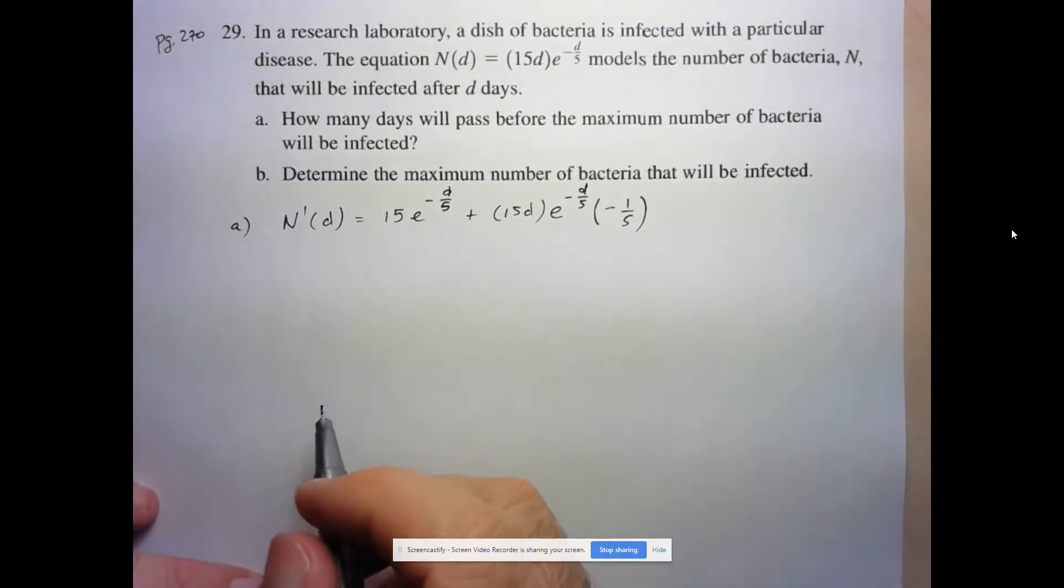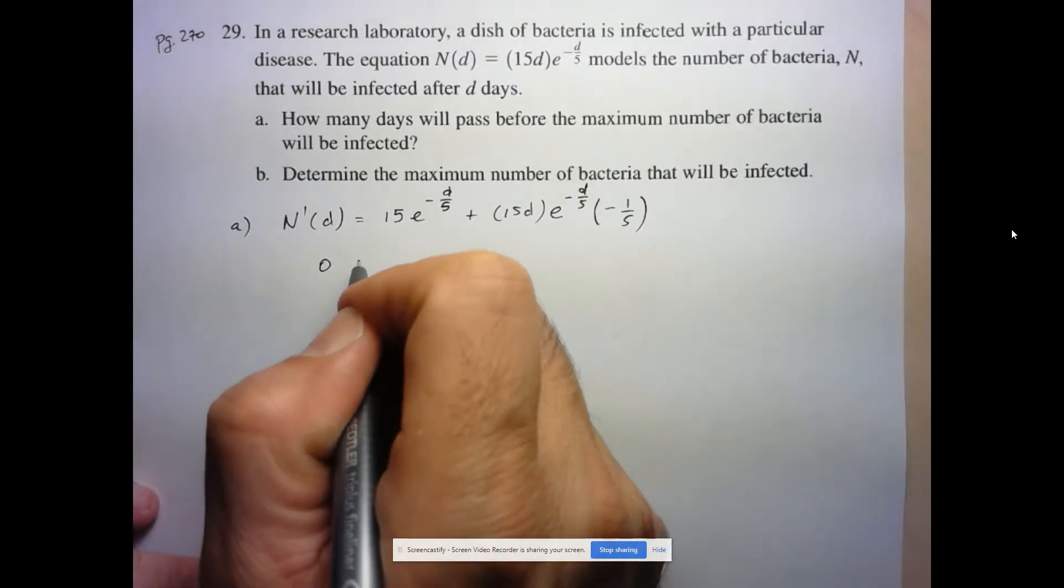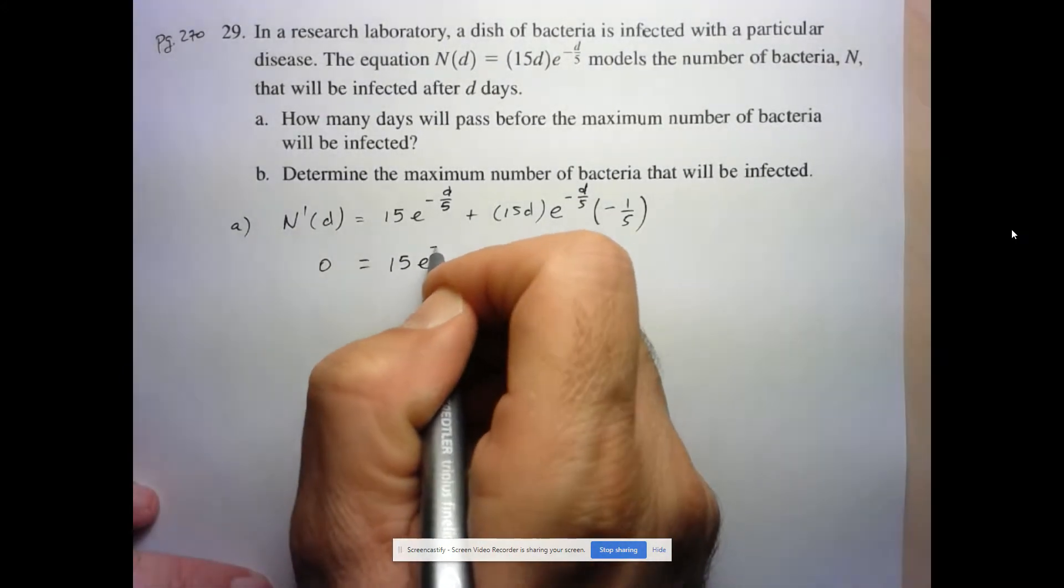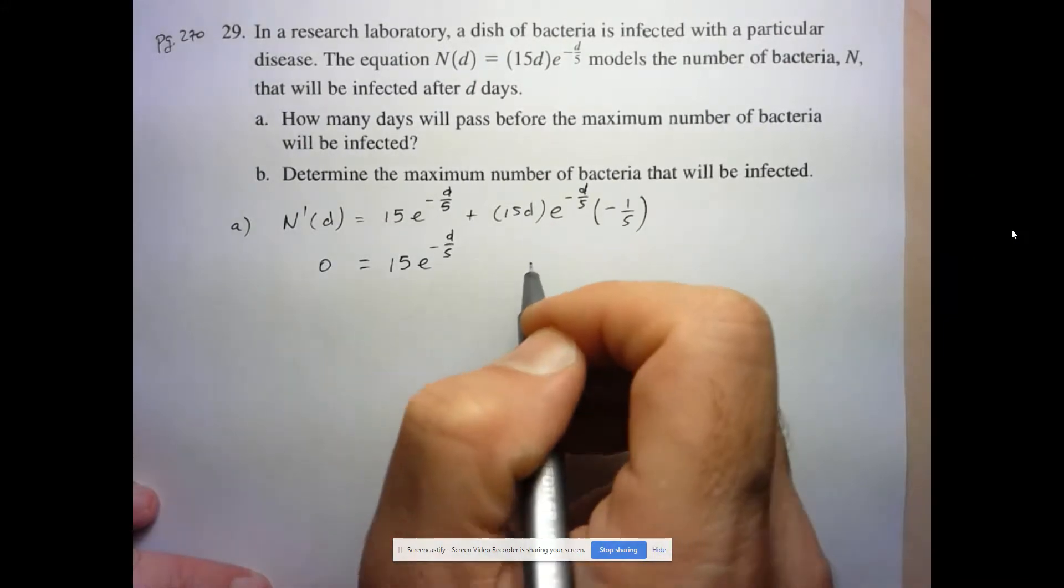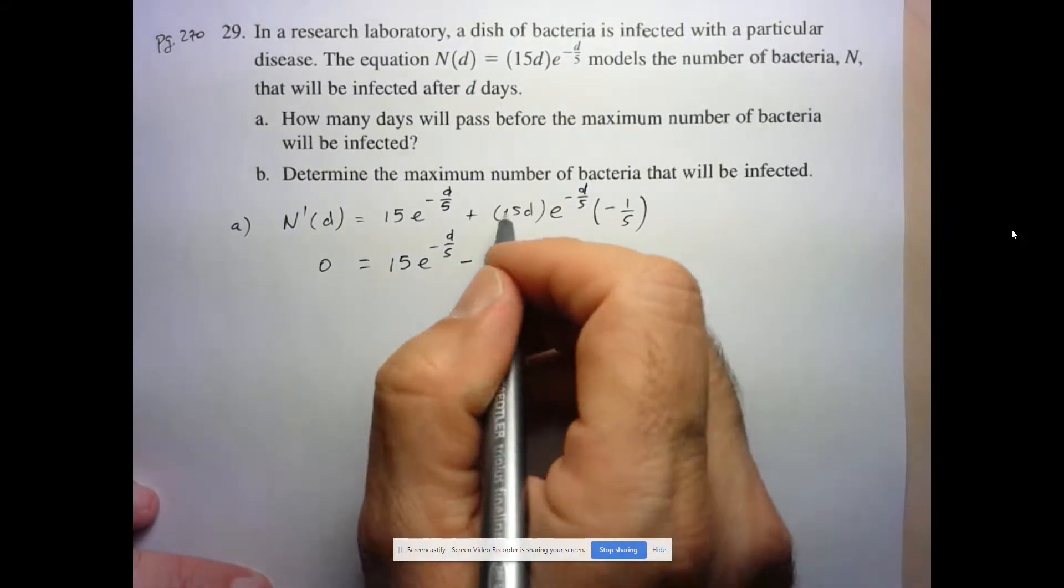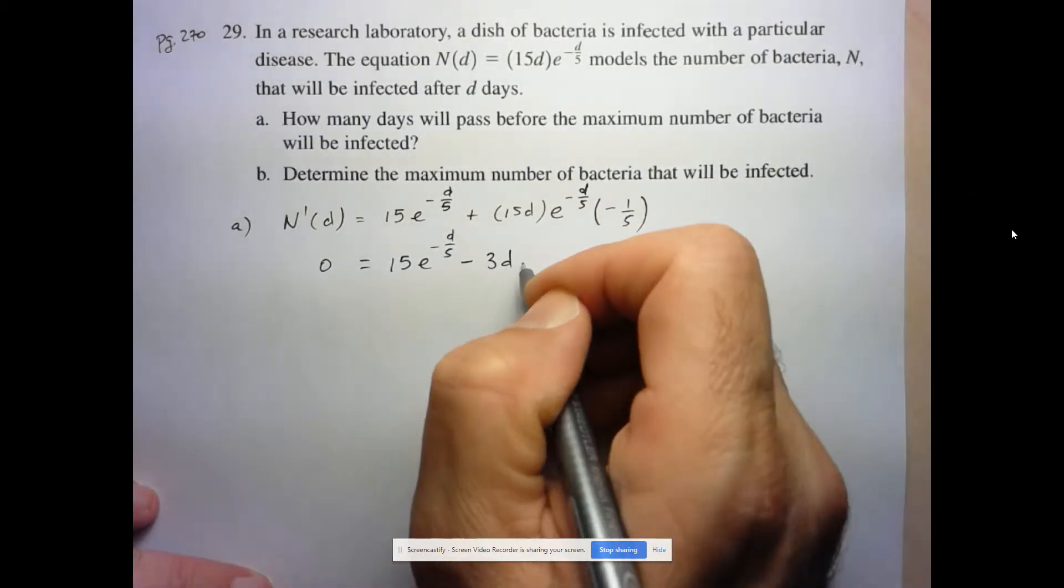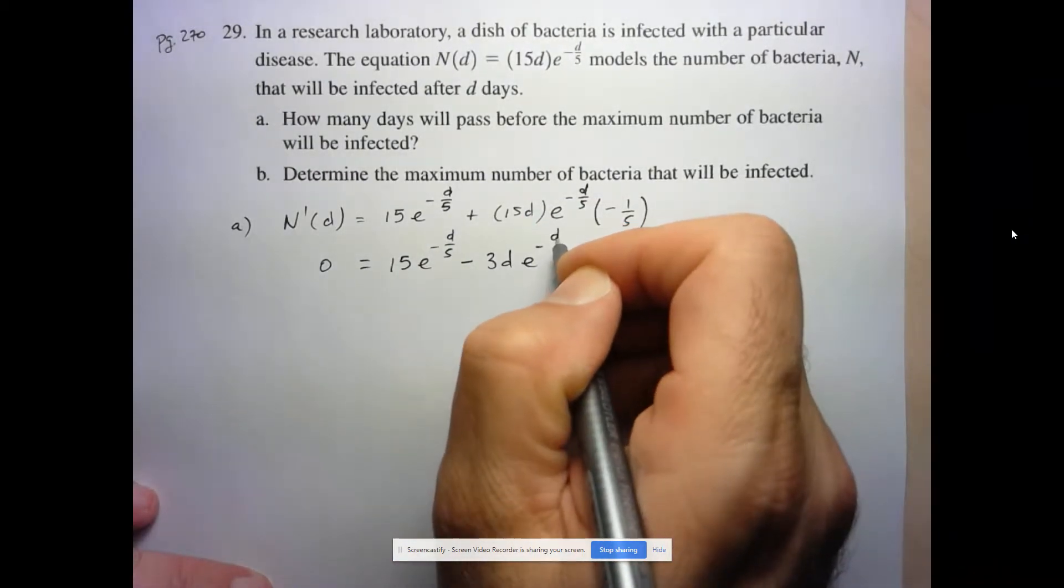Since we're looking for the critical points, we want to determine when this derivative is equal to 0. So let's simplify. So 15E to the negative D over 5, and here we're going to end up with minus 15 times 1 fifth is 3, D times E to the negative D over 5.